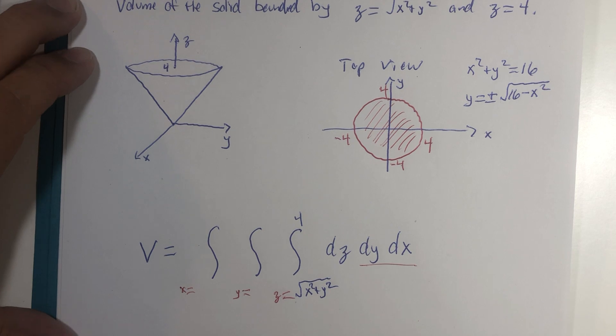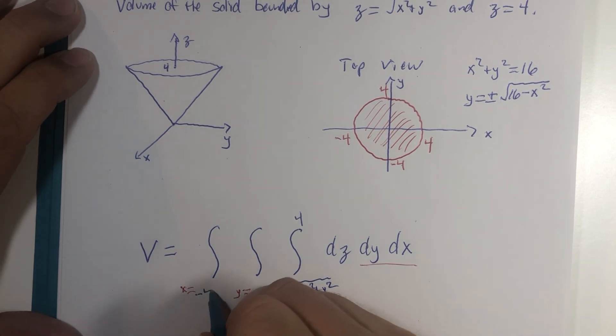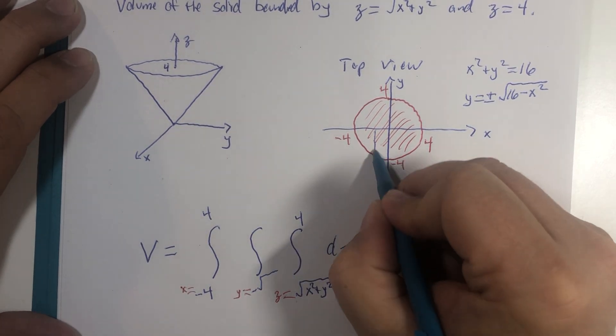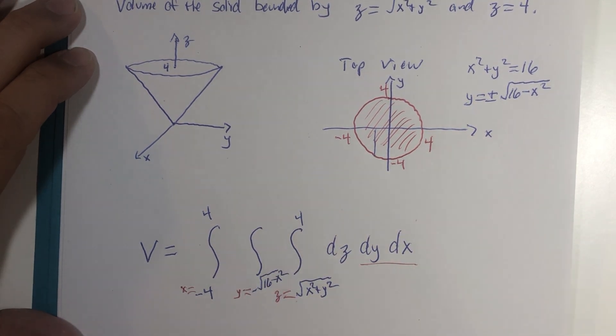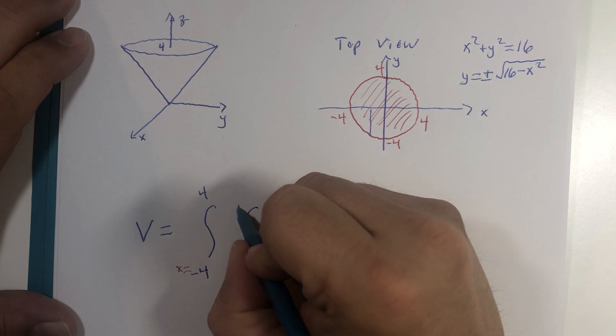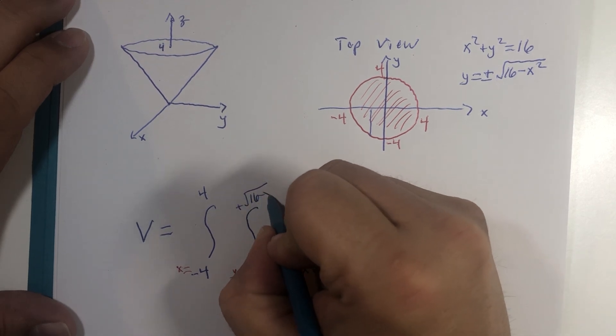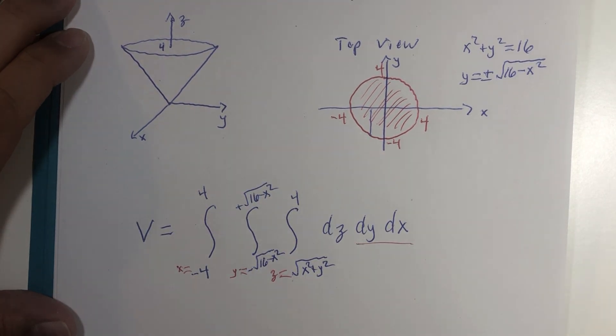And then the circle we've now done a number of times: x goes from negative 4 to positive 4, and y goes from the negative, the lower part of the circle, negative square root of 16 minus x squared, to positive square root 16 minus x squared. And there you have it.